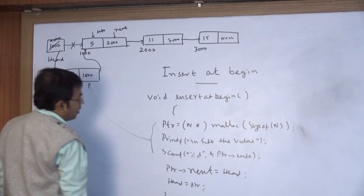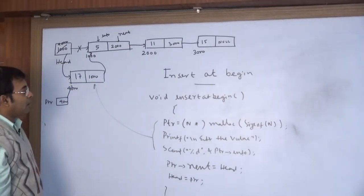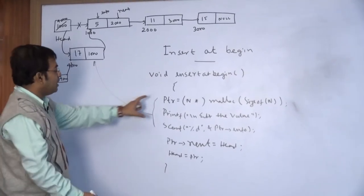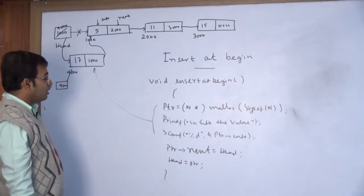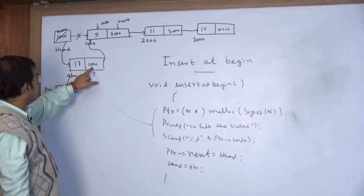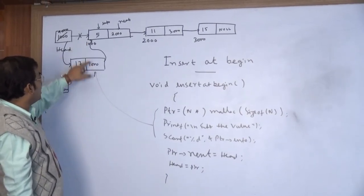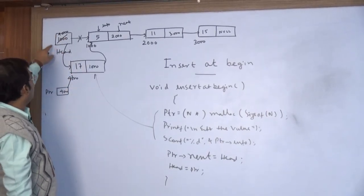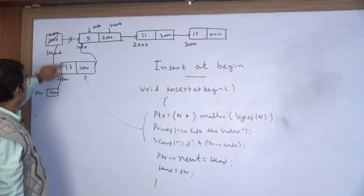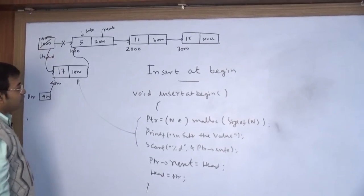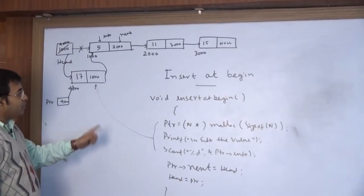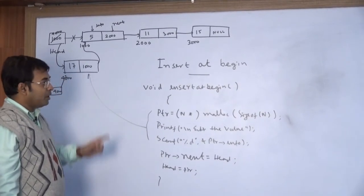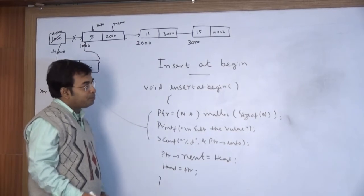To summarize the three steps for inserting at the beginning: first, create the node; second, assign the next part of the newly created node to the current first node's address (1000); third, change the head pointer to 4000, because the new node is now the first node of the linked list.